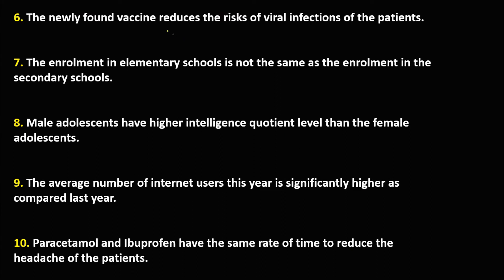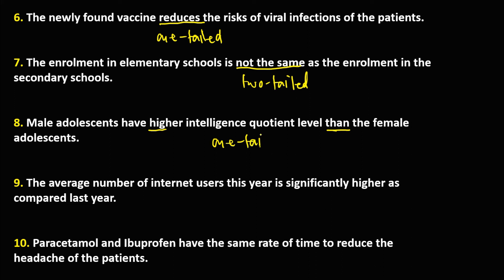For number six, so with direction — this one is a one-tailed test. Then for number nine, we have 'significantly higher than,' so this is a one-tailed test.